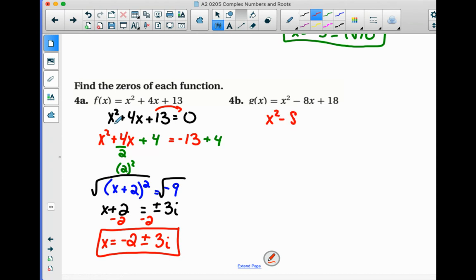Set it equal to zero. So we've got to send that plus 18 to the other side. So it'll be negative 18 over there.